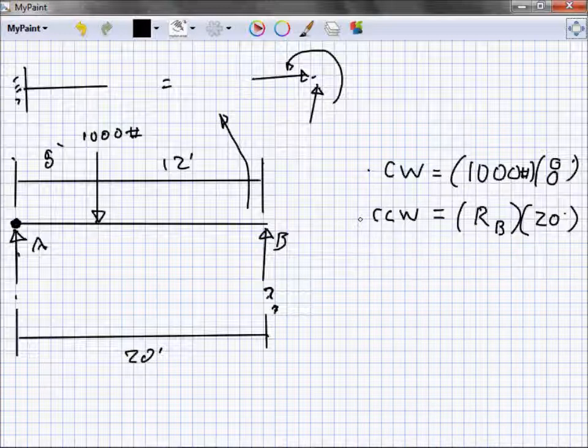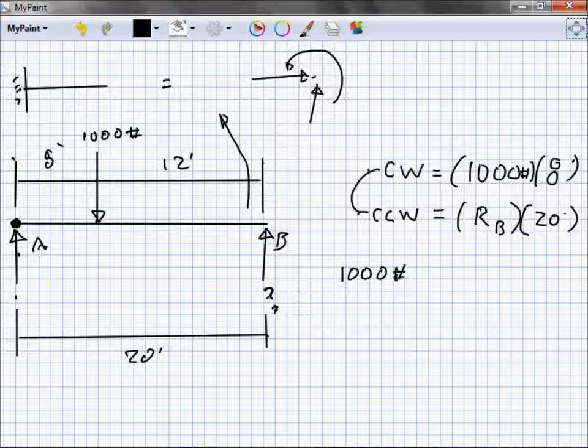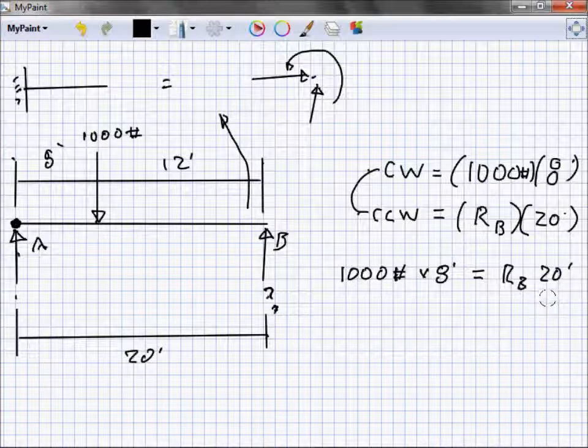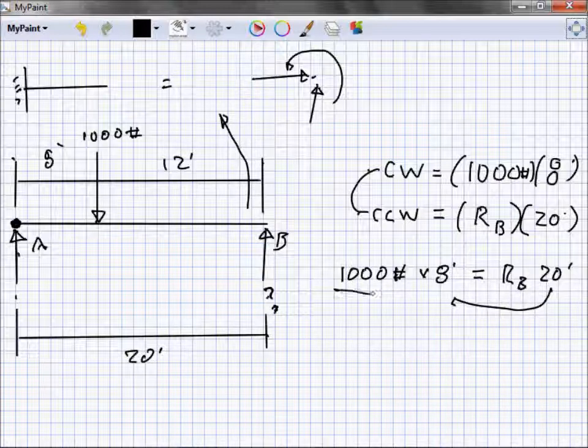We've got clockwise equals counterclockwise. We know these have to equal each other, so 1,000 pounds times 8 feet has got to equal that reaction at B times 20 feet. Algebra tells me I put this 20 feet over here.